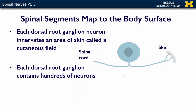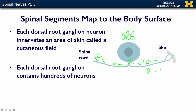The dermatomes are made up of all of the dorsal root ganglion projections from one spinal level. Here's a depiction of a dorsal root ganglion, or DRG, neuron. It has its peripheral projection where it's gathering information from the skin, carrying information back into the cell body, and then out via its central process toward the spinal cord, toward the dorsal horn.